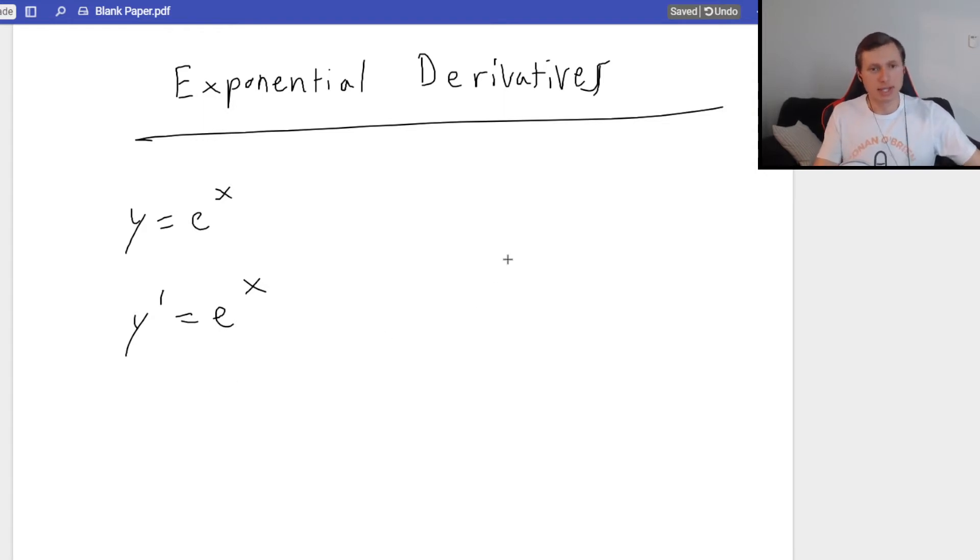Now if I had y equals e to the 2x, the problem seems impossible. I have e to the 2x in my exponent. Don't worry, it's actually possible. All you need to do is ask yourself, what's the derivative of my exponent? 2x? Okay, well the derivative of that is 2.